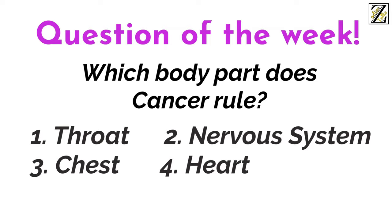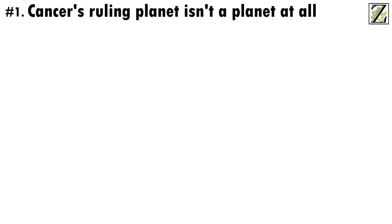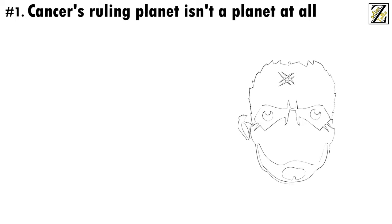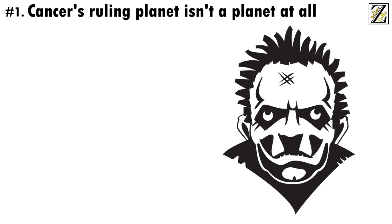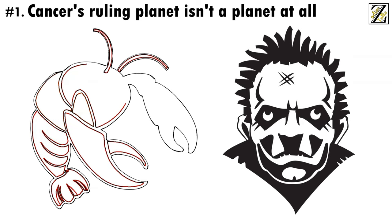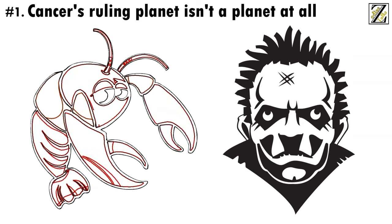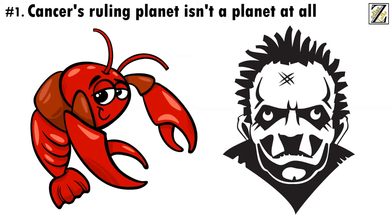Proceeding to Interesting Facts. Number 1. Cancer's ruling planet isn't a planet at all. It's a satellite. That's right, Cancer's ruling planet is the moon. And though some people might call them lunatics because of this, having the moon as a ruling planet only goes to show you how different Cancers are.